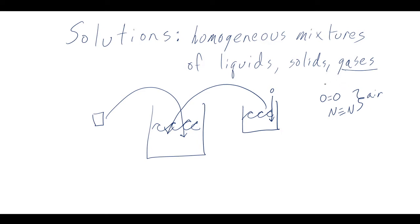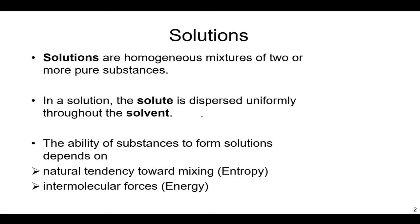Today we'll define each of these terms and think about what governs when gases go into a liquid, when one liquid goes into another, and primarily when a solid goes into a liquid. A solution is a homogeneous mixture of two or more pure substances. A pure substance is an element by itself — like nitrogen gas — or a pure compound like water. It's not already some kind of mixture.